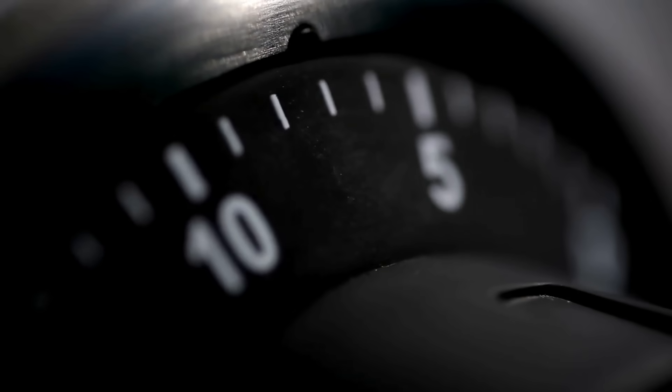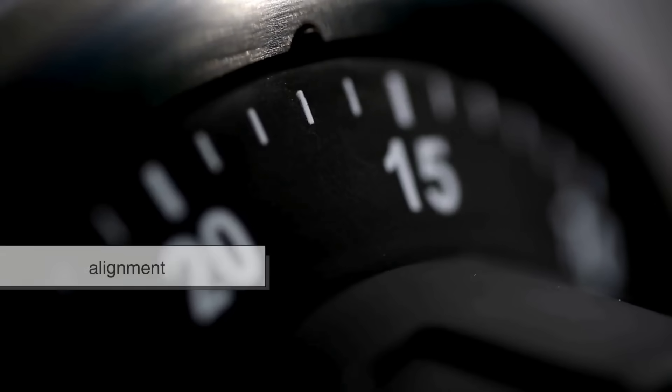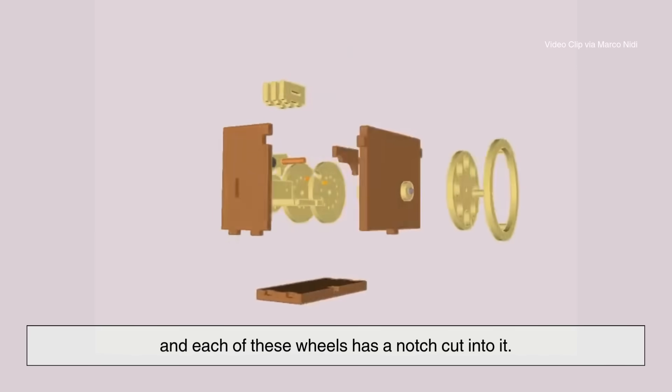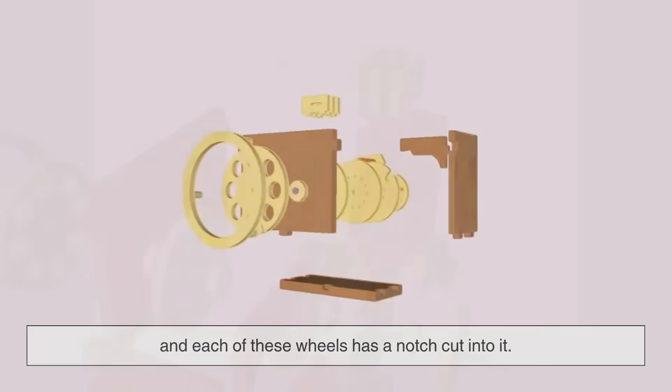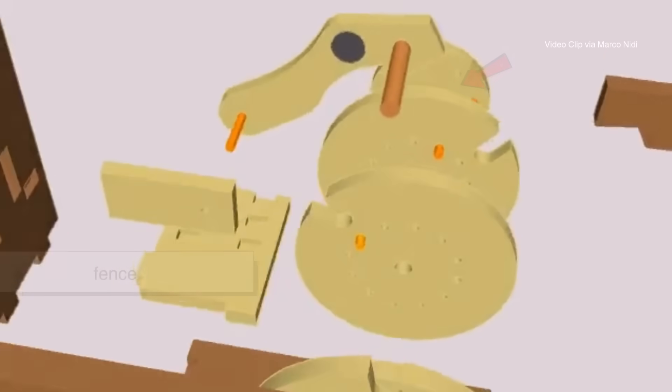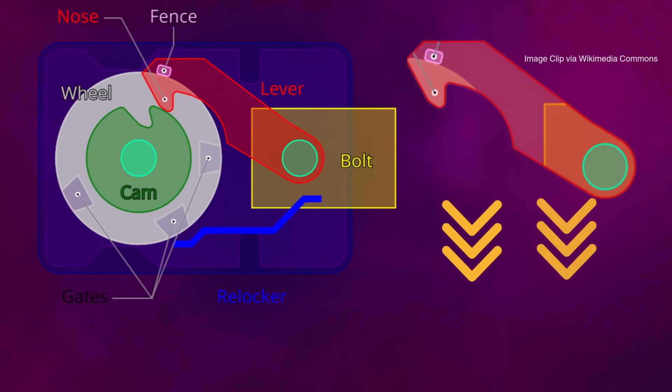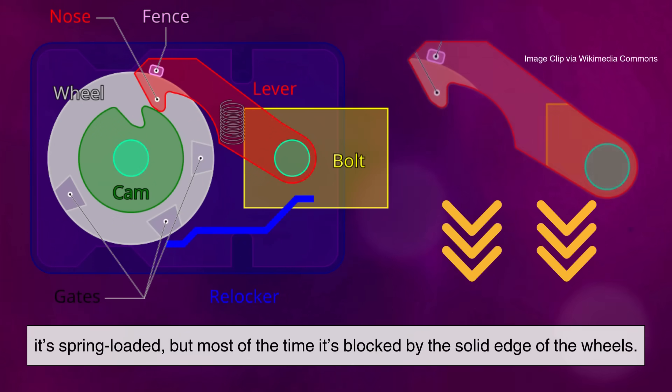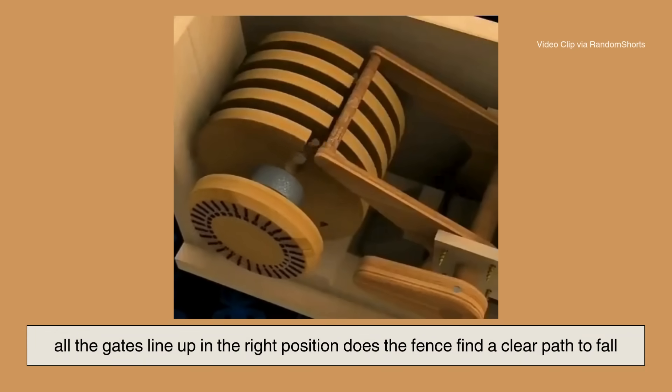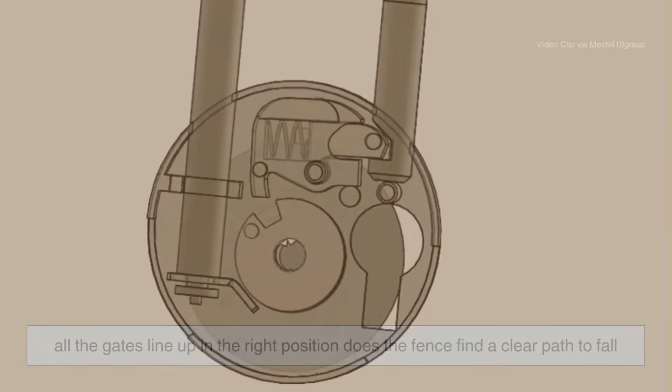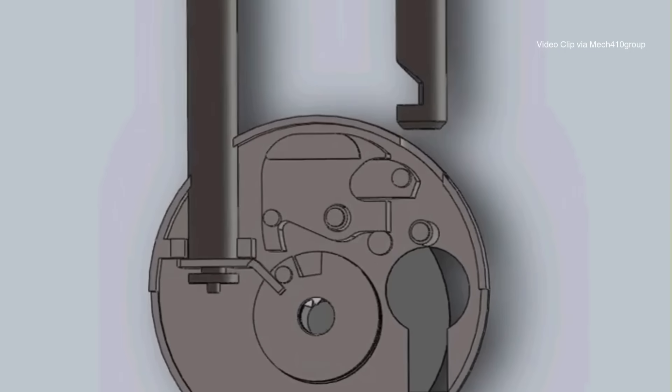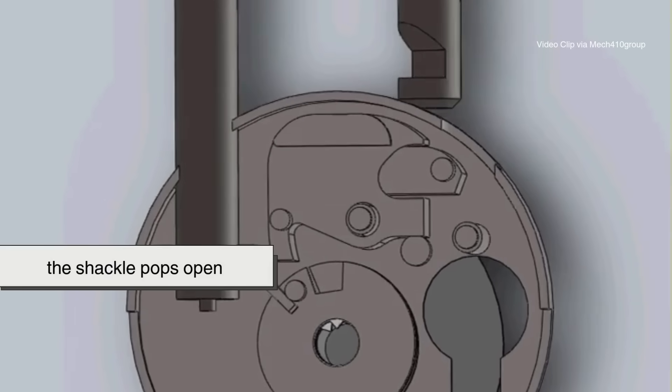At the heart of every combination lock is the same principle—alignment. Inside the lock, there are several wheels stacked together, and each of these wheels has a notch cut into it. These notches are called gates. Sitting above the wheels is a thin bar known as the fence. The fence is always trying to drop downward because it's spring-loaded, but most of the time it's blocked by the solid edge of the wheels. Only when all the gates line up in the right position does the fence find a clear path to fall. And when it drops, it pulls back a bolt inside the lock. That's the moment you hear the satisfying click and the shackle pops open.